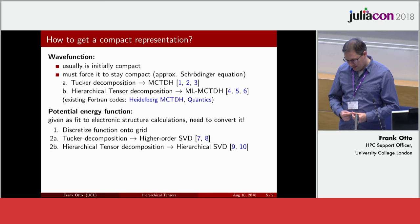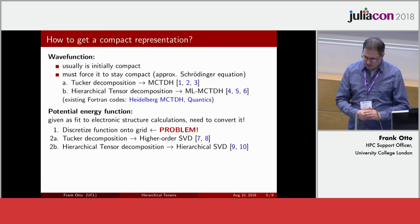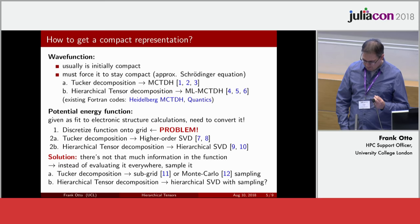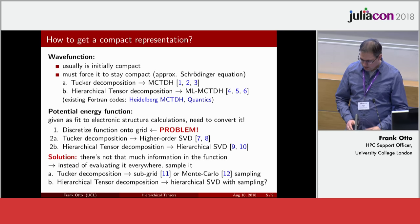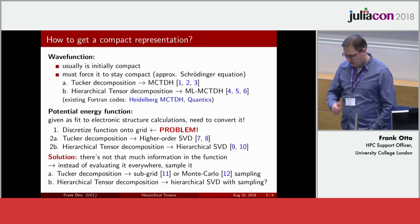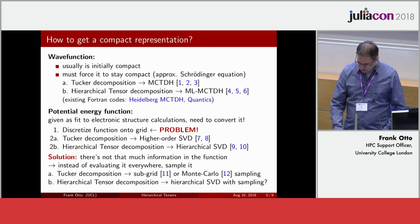The potential energy function is a complicated functional form that does not have this compact structure, so we need to convert it. There are existing algorithms: discretize the function onto a grid, then use the higher-order singular value decomposition for a Tucker decomposition, or the hierarchical SVD for the hierarchical tensor. The problem is we need to discretize to the grid first — which is what we wanted to avoid. Luckily this can be solved, because from an information theory perspective there's not really that much information in the function — it's sufficient to sample it rather than evaluate it everywhere. My ex-colleagues in Heidelberg worked out how to do this with subgrid or Monte Carlo sampling to compute a Tucker decomposition. For the hierarchical tensor you'd need a hierarchical SVD with sampling.